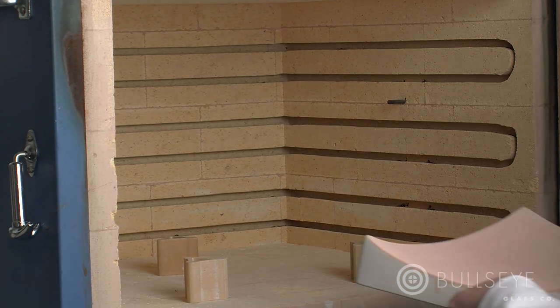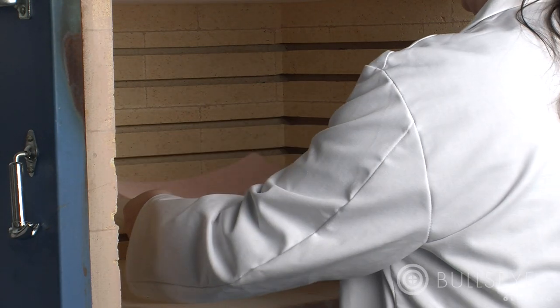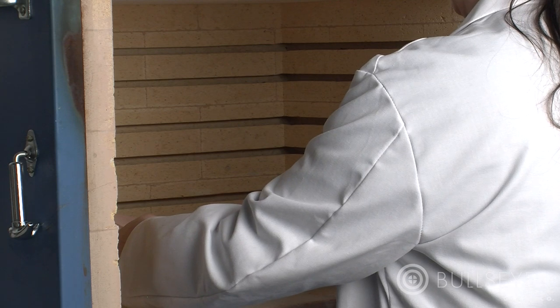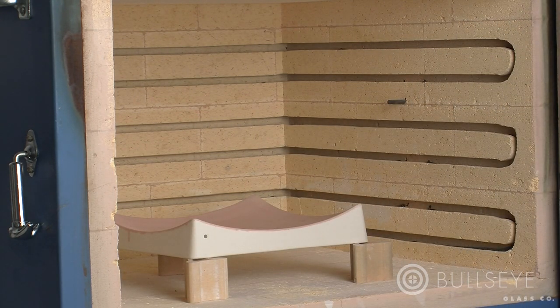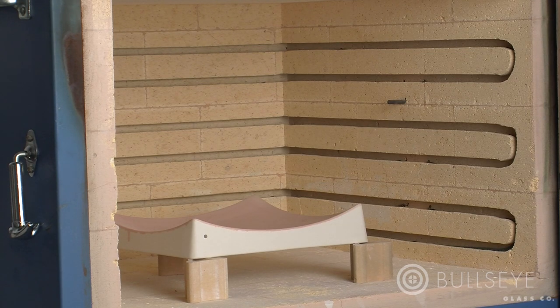Kiln dry the freshly prepared mold more slowly than you would a kiln shelf to prevent breakage. Fire at 500 degrees Fahrenheit per hour to 500 degrees with a 20-minute hold.